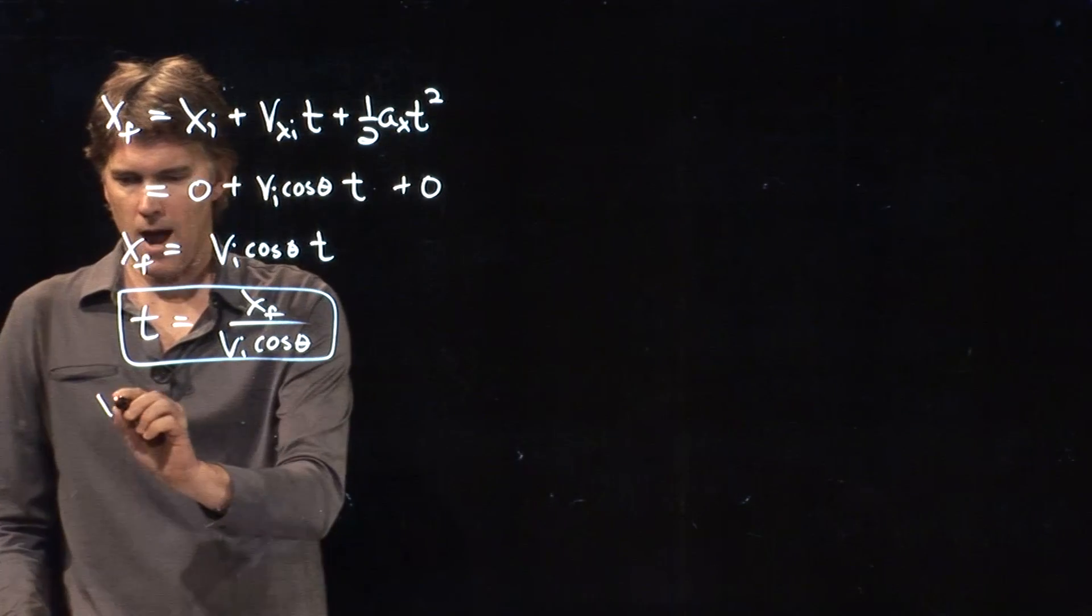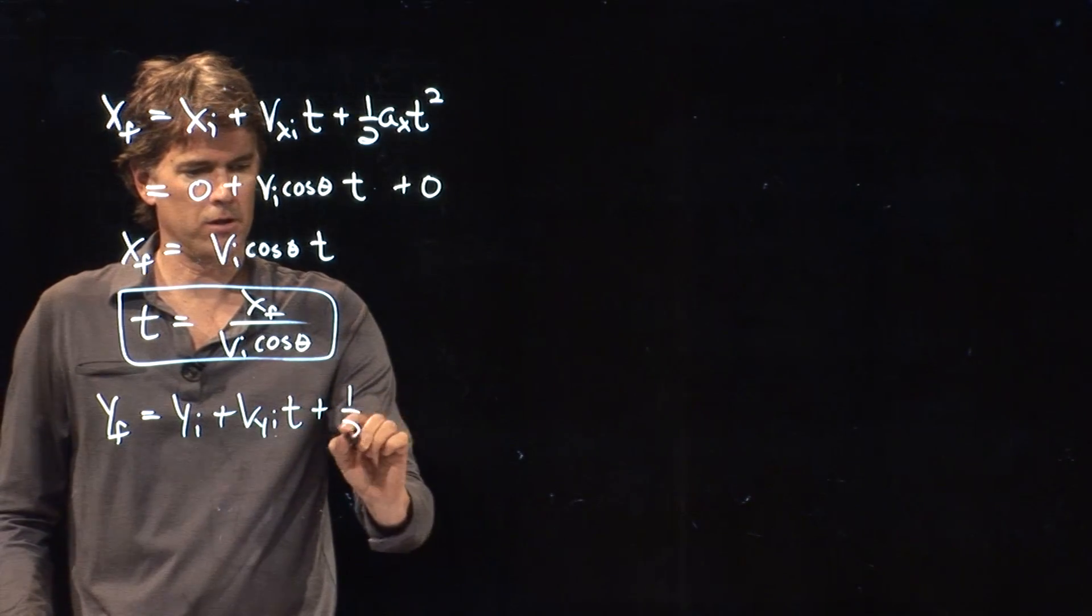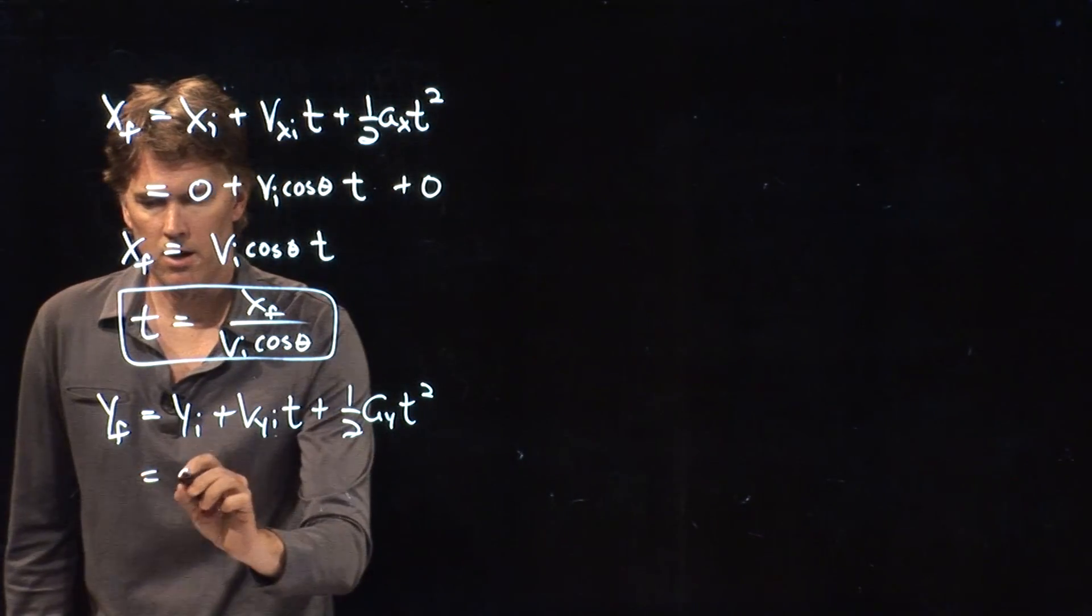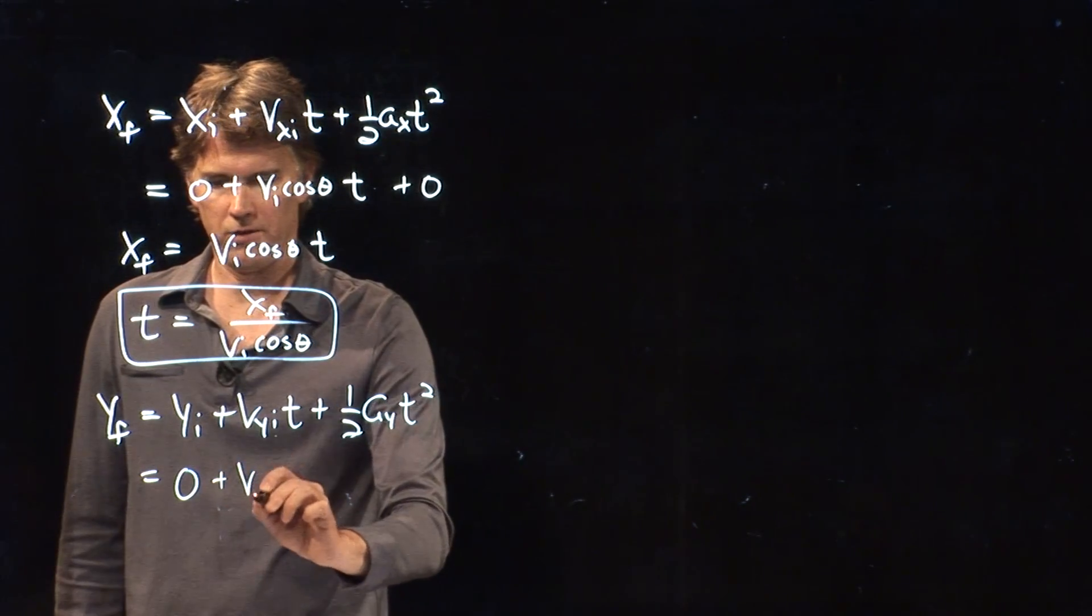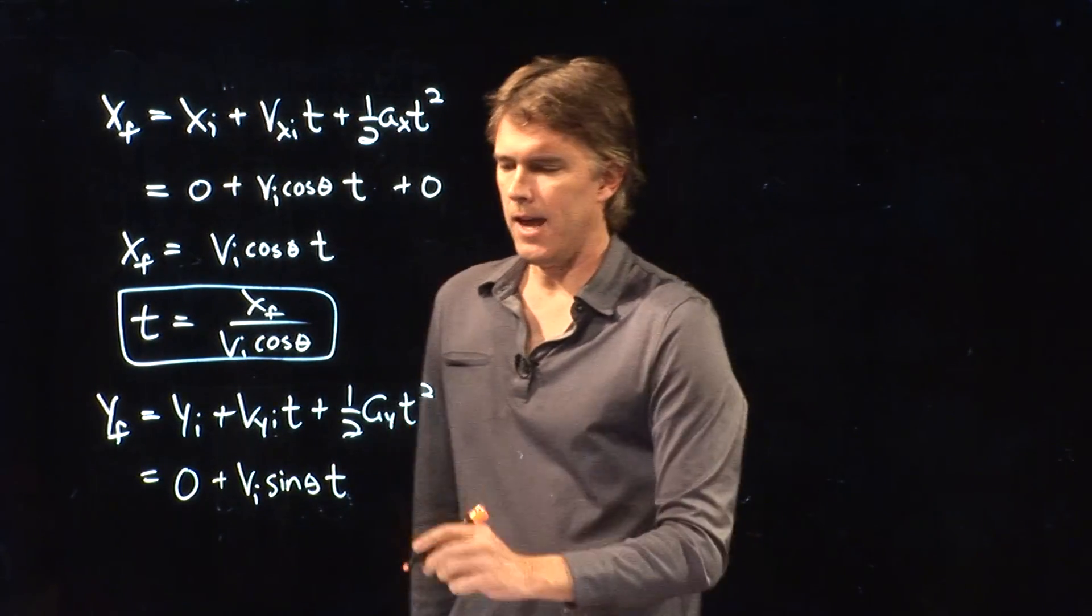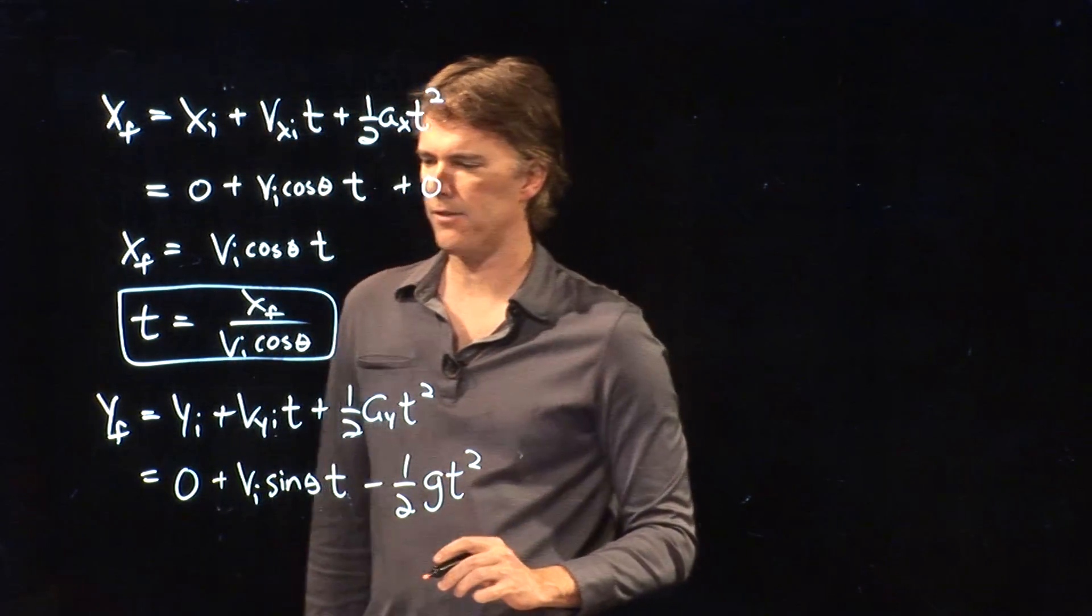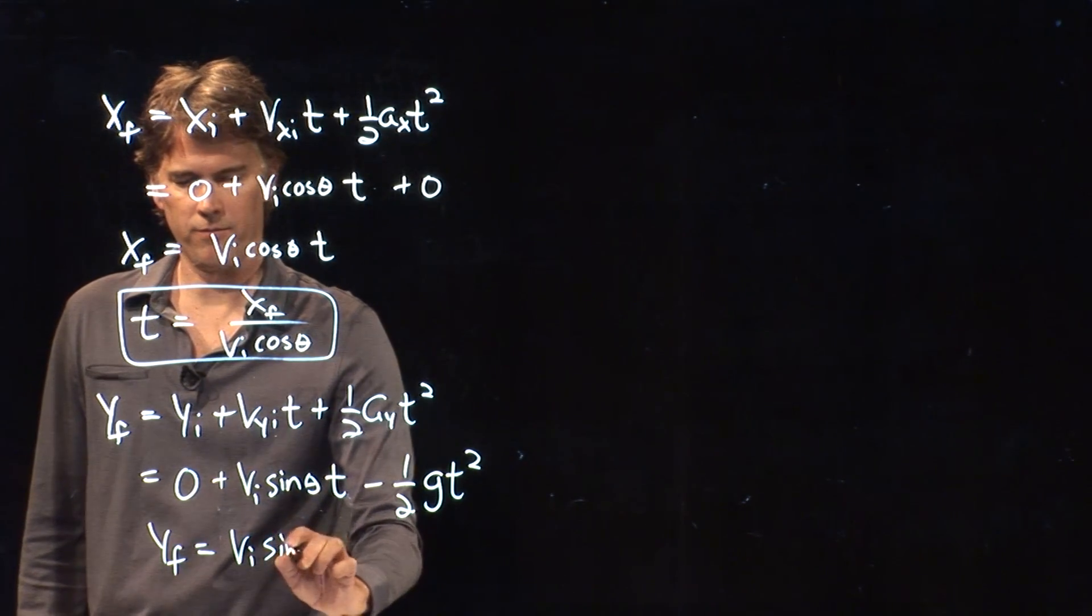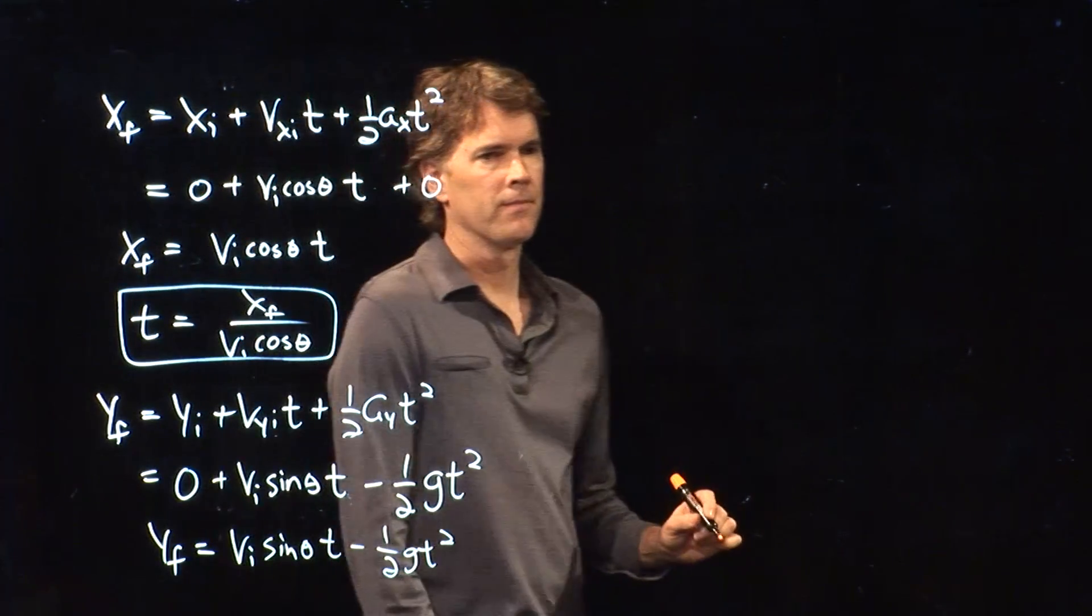The other equation is for y. yf equals yi plus vyi times t plus 1/2 ay t squared. And now let's put in our parameters. We've got zero for the initial position. vyi, we said, was vi sine theta. Still multiplying by t. And ay, we said, was negative g. So that's our equation for y. We can get rid of that zero. And we just have vi sine theta t minus 1/2 g t squared.